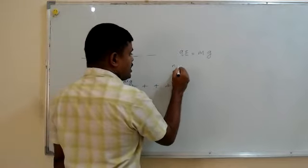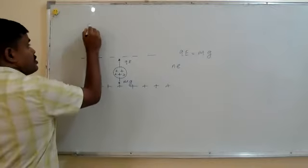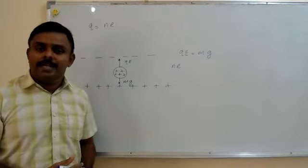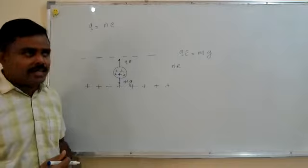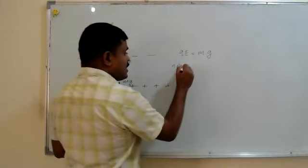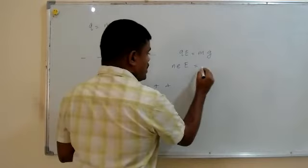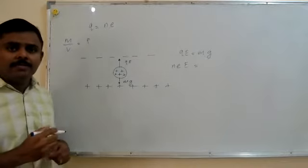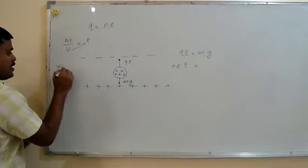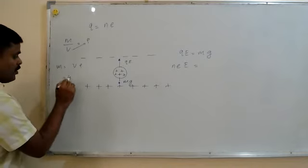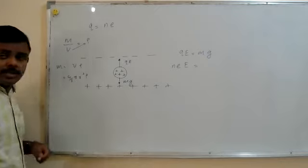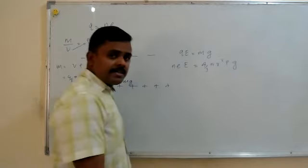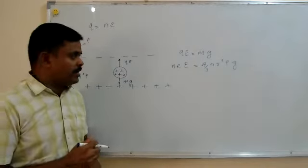We can write q as n times e, since charge exists as an integral multiple of the electronic charge. So the equation becomes: n × e × E = mg. Mass can be written using density: mass = volume × density, so mass = (4/3)πr³ρ. Substituting, the equation becomes: n × e × E = (4/3)πr³ρg. This is one of the most important questions in this topic.